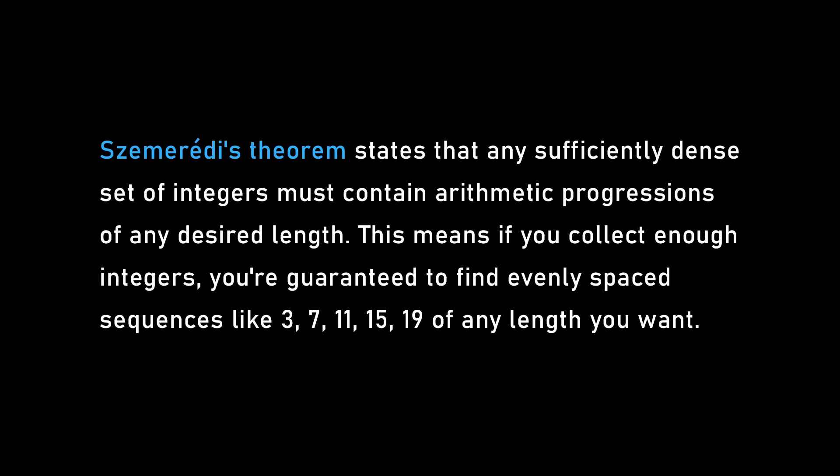These inverse theorems create a dichotomy: objects you study either have no structure at all, or are somehow related to something that is structured — and in either case you can make progress. A good example is Szemerédi's theorem, proven in the 1970s, which concerns finding arithmetic progressions — things like 3, 5, 7, or 10, 15, 20 — in a set of numbers. Szemerédi proved that any set of numbers with sufficiently high density, what's called positive density, contains arithmetic progressions of any length you wish. The odd numbers, for instance, have density one-half and contain arithmetic progressions of any length. Szemerédi's theorem also applies to random sets — if you flip a coin for each number and only keep the heads, that set has no patterns, but from random fluctuations you will still get arithmetic progressions.